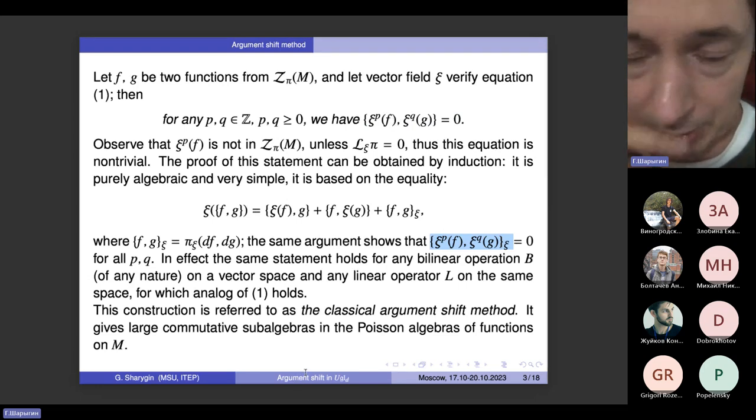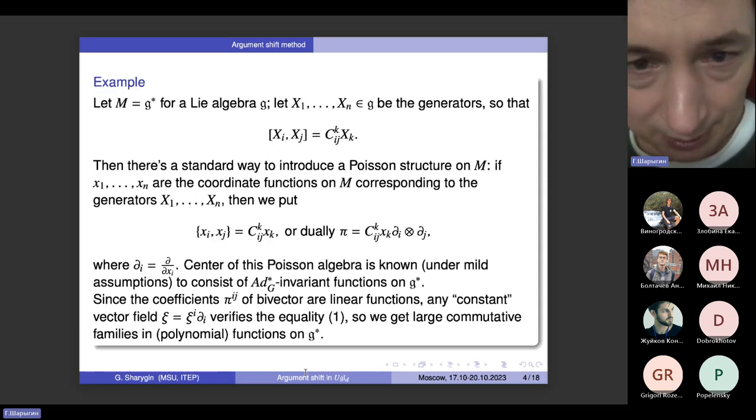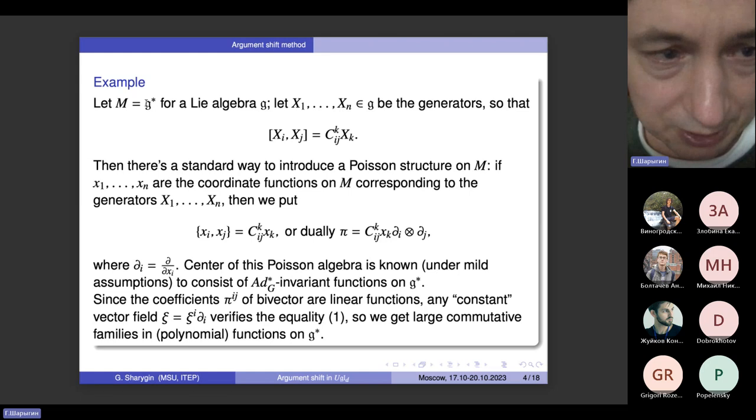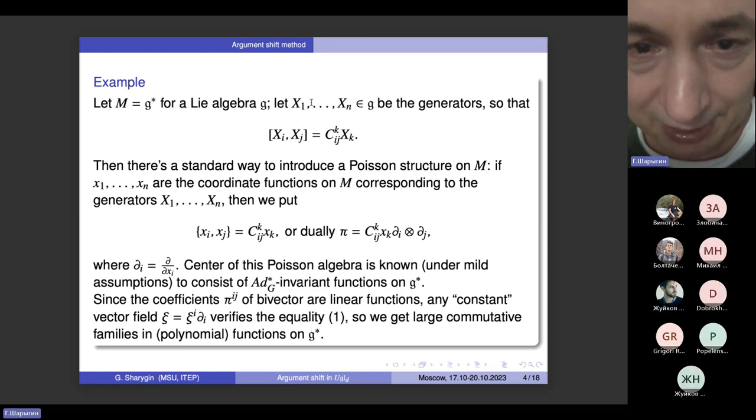This is usually called the classical argument-shift method, and it allows you to construct a large community of subalgebras in the Poisson algebras of functions. The main example of this situation is given by a co-adjoint representation of a Lie algebra G.